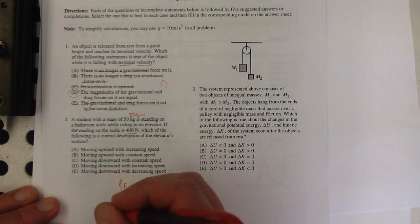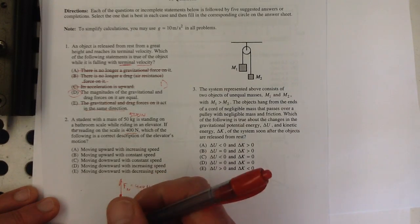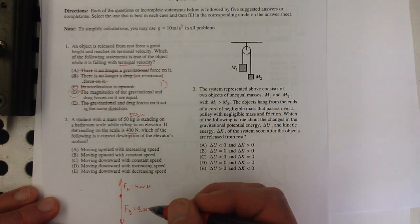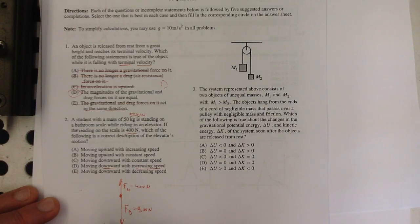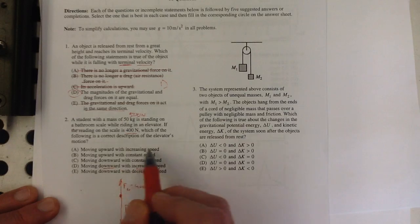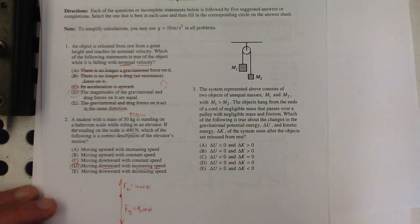Now there's two things that could be happening here. They could be going down and getting faster, moving downward with increasing speed, or they could be moving upward with decreasing speed. And the upward with decreasing speed isn't an option. So it's gotta be D.